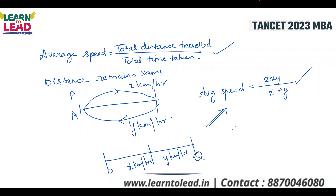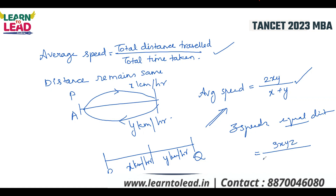For three speeds at equal distance, the average speed formula is 3xyz divided by (xy plus yz plus zx).